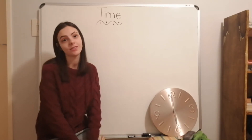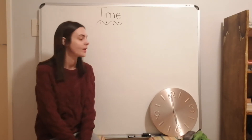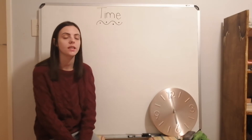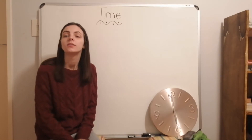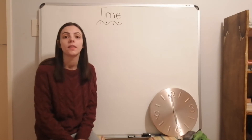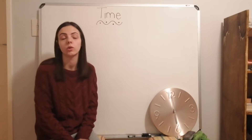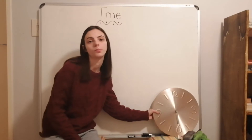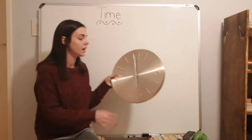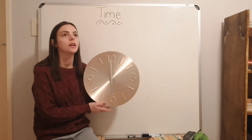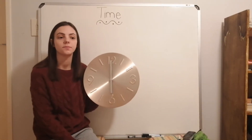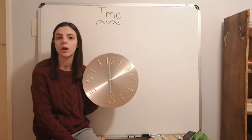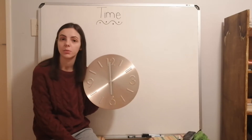Hello grade 2's, let's talk about time. We have learned about hours and half hours, but today I want to talk about time that's passing — we call it elapsed time. For example, the movie started at three o'clock and it was one hour long — what time did the movie finish?